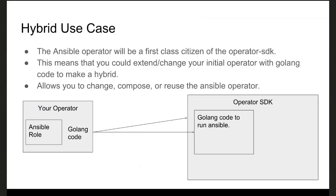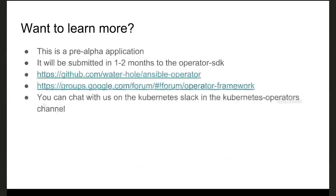The hybrid use case: because the Ansible operator code will be part of the operator SDK, you can use the Ansible operator code the same way you would the regular operator SDK code. This means you can compose pieces of Ansible that you might want to run from a normal Go operator that you're writing, giving you more flexibility to do things you'd like to do.